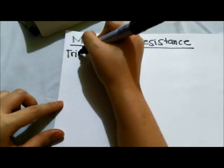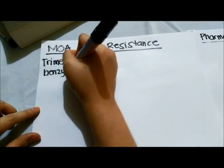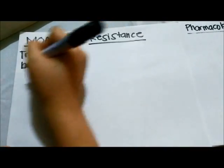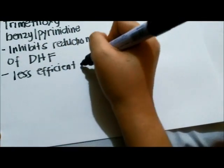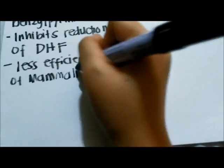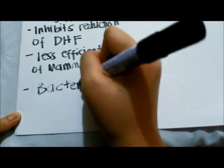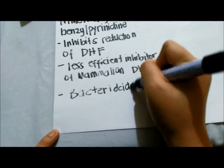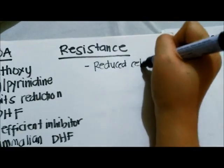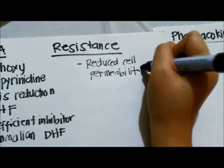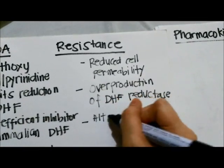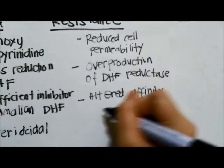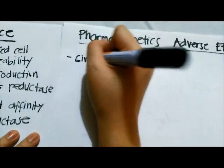Our last topic is trimethoprim. Trimethoprim selectively inhibits bacterial dihydrofolic acid reductase, which converts dihydrofolic acid to tetrahydrofolic acid. Trimethoprim is a much less efficient inhibitor of mammalian dihydrofolic acid reductase. In combination with sulfonamides, it blocks sequential steps in folate synthesis, resulting in marked enhancement of the activity of both drugs. The combination is often bactericidal compared with the bacteriostatic activity of a sulfonamide alone. Resistance to trimethoprim can result from reduced cell permeability, overproduction of dihydrofolate reductase, or production of an altered reductase with reduced drug binding.